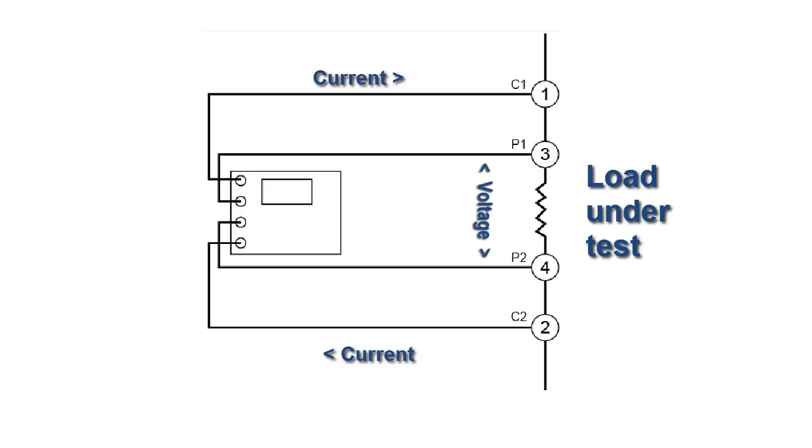There is virtually no current flowing through the sense probes. Nearly all the current flows through the source probes. This allows for a high level of measurement sensitivity and accuracy when the load under test is of low resistance.